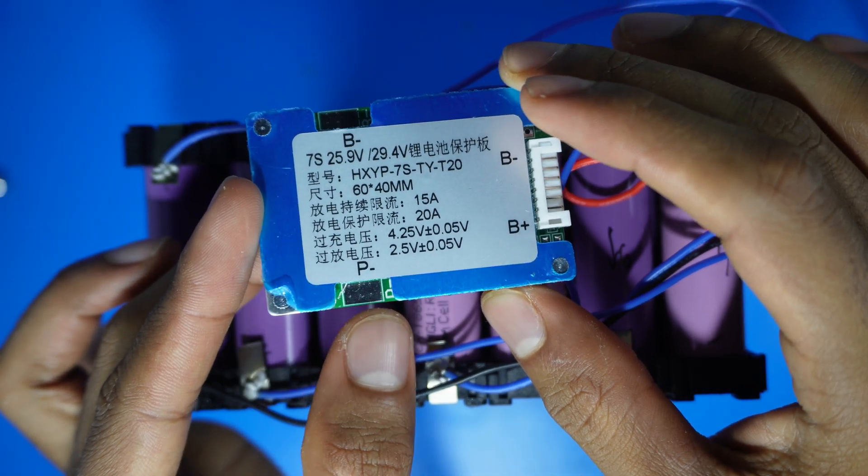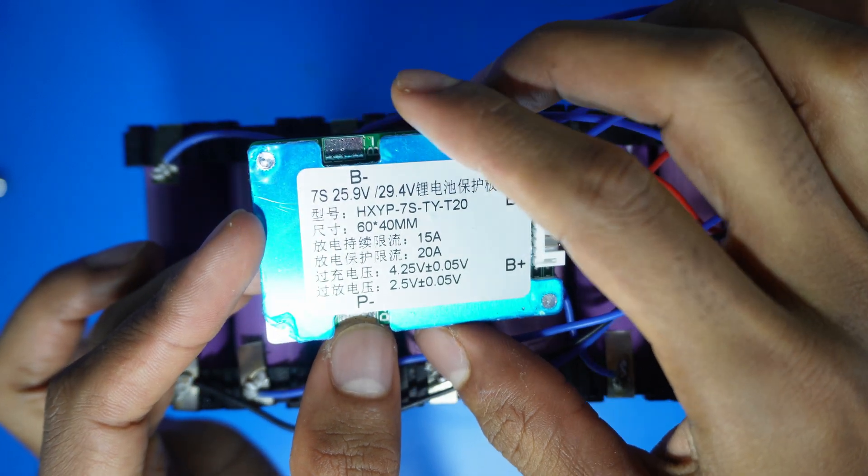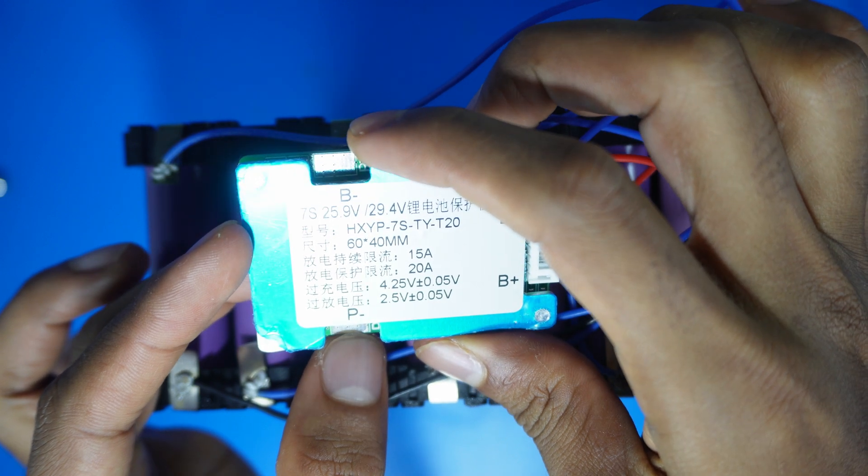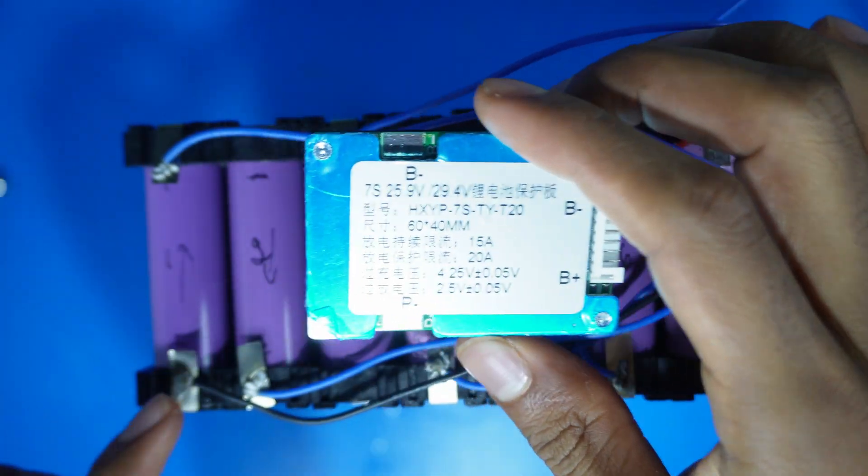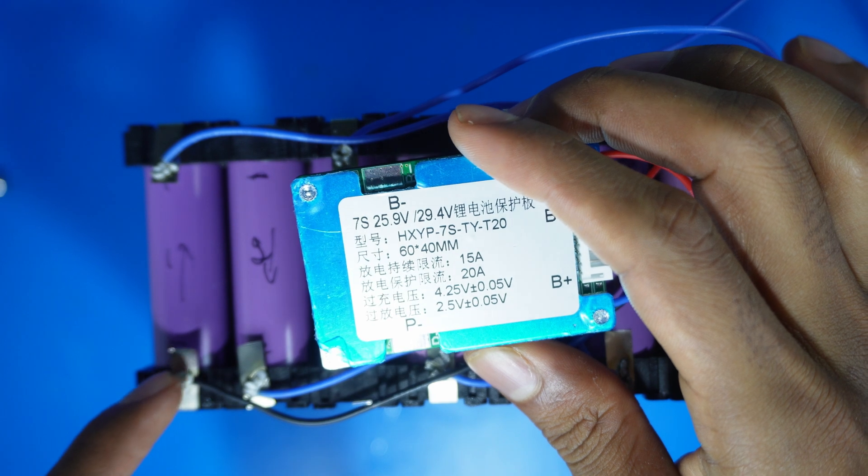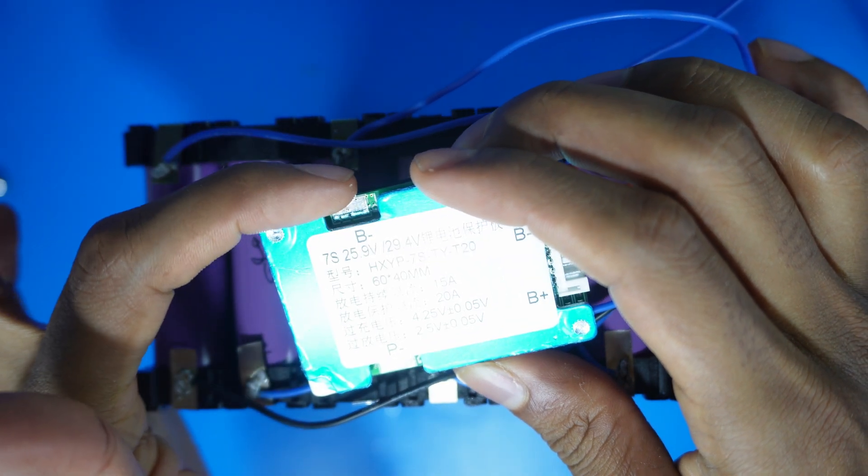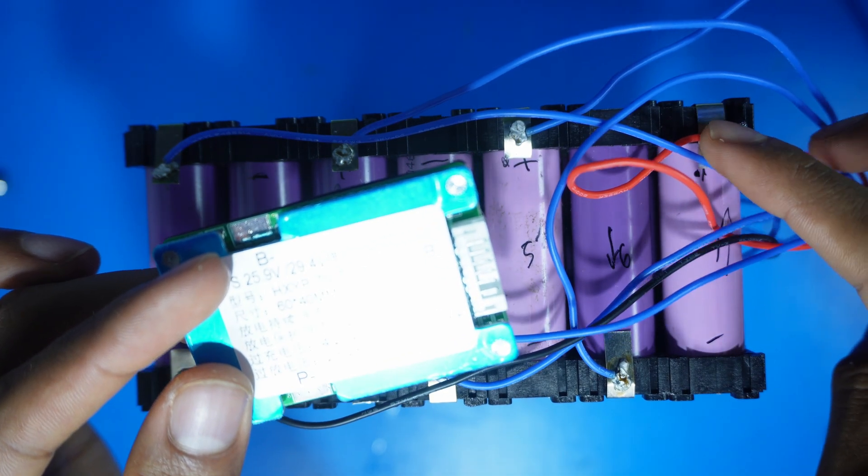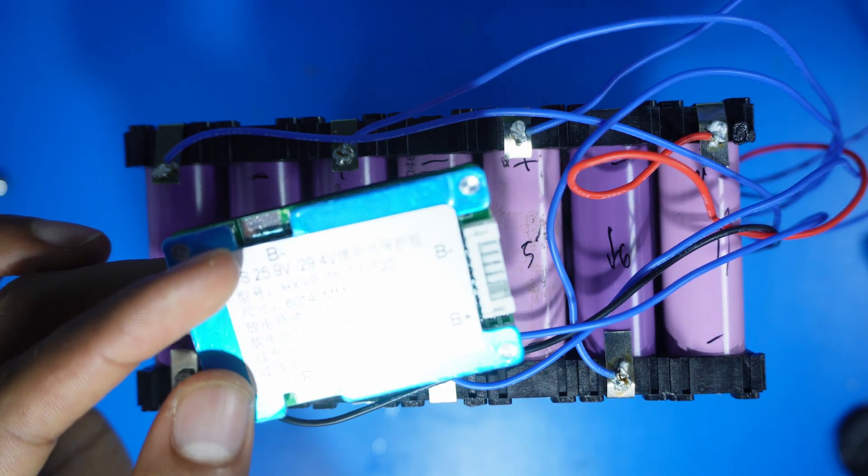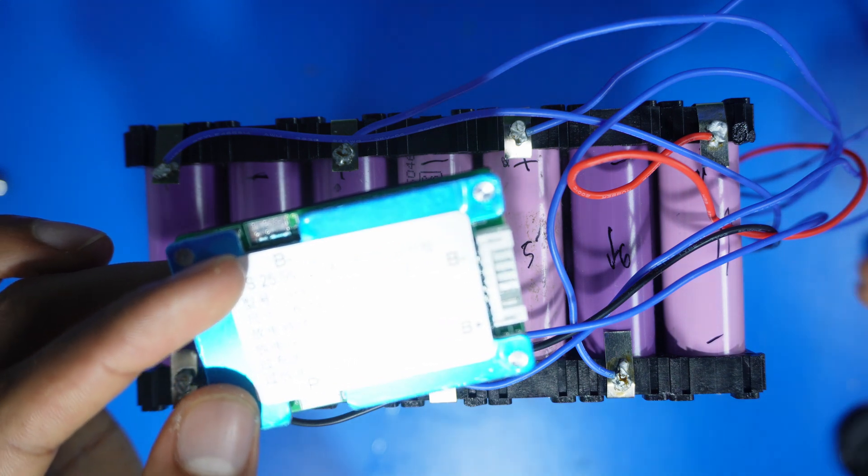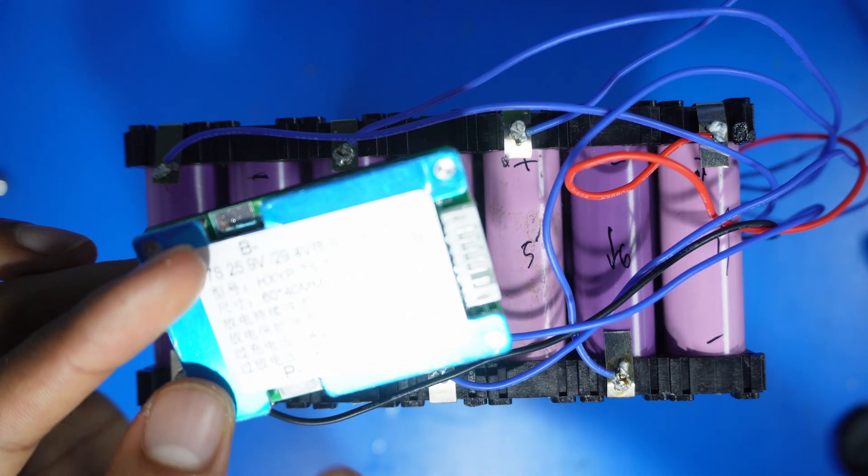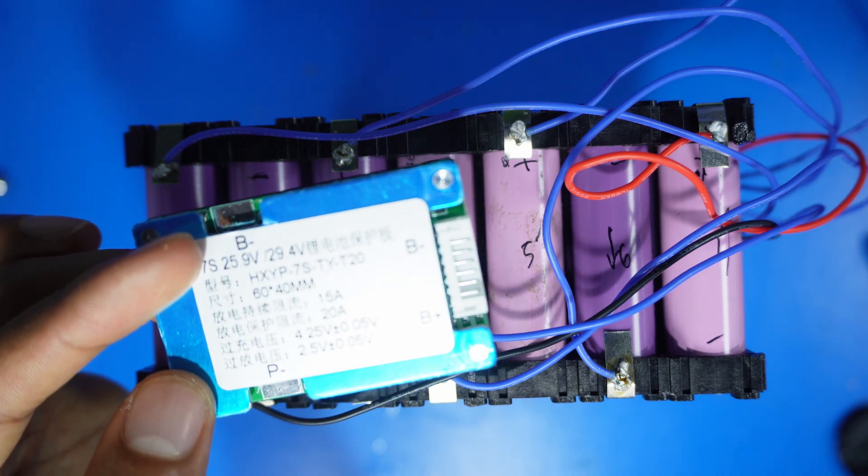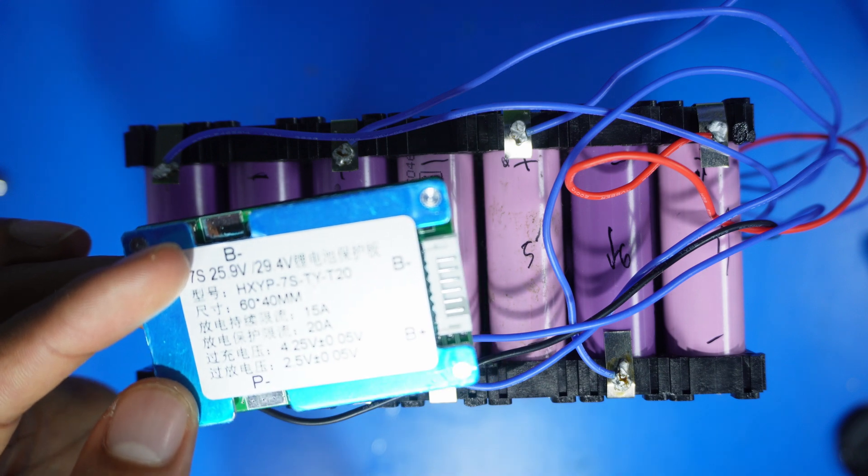The BMS has P-minus and B-minus terminals. The P-minus is the power minus and the B-minus is the battery minus. The negative of the battery should be connected to the B-minus of the BMS. Positive of the battery goes to positive terminal of the power supply, that's the 24V power supply. The negative of the power supply comes to the P-minus of the BMS. Let me show you by wiring these connections.